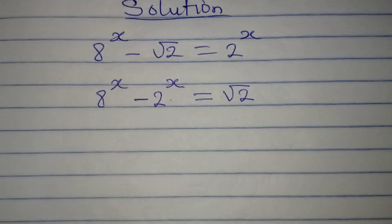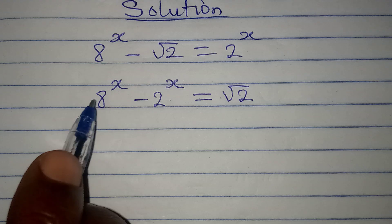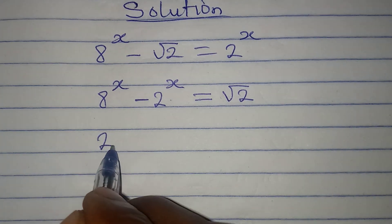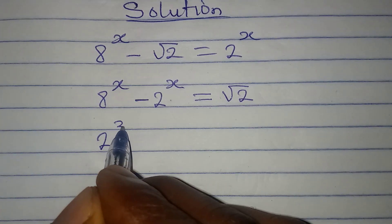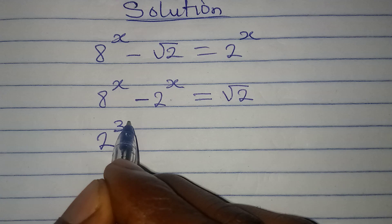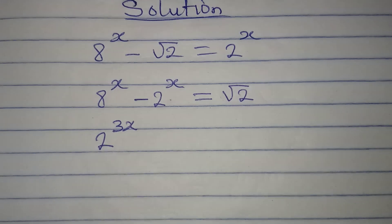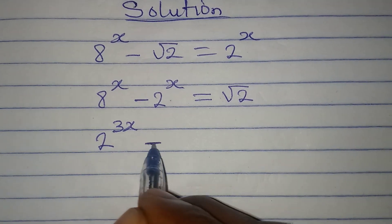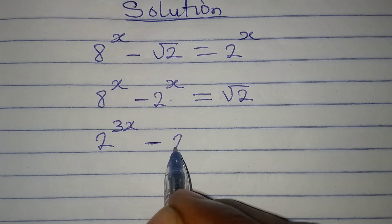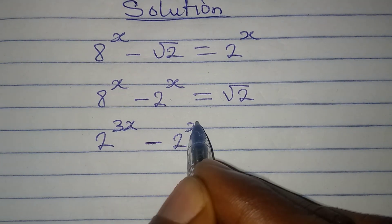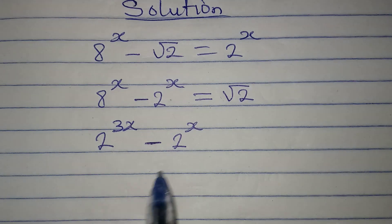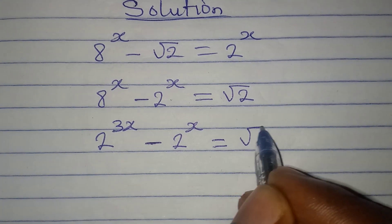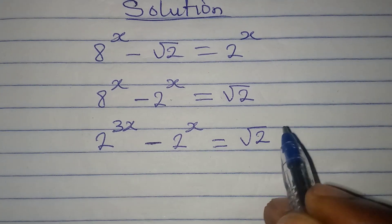The next thing is for me to break this 8 down to have 2 to the power of 3, and then multiply by x. I'll have 2 to the power of 3x minus 2 to the power of x, and this will be equal to square root of 2.